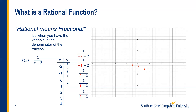Now when I plug in 2, I'll have 1 over 2 minus 2. Two minus 2 is 0, and 1 over 0 — you can't do it. You can't have 0 in the denominator of a fraction. Go ahead and try it on your calculator and it'll give you some error message. So we call that undefined.